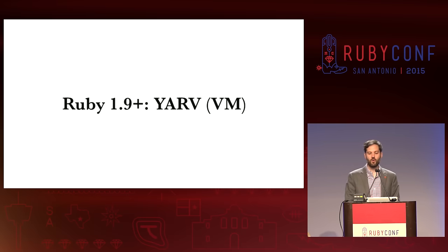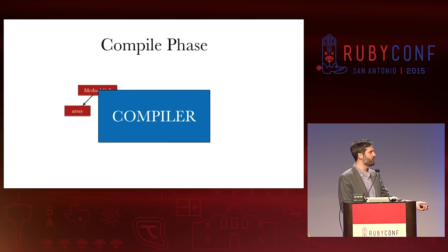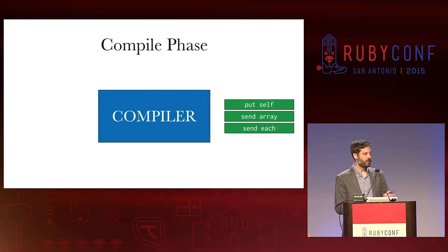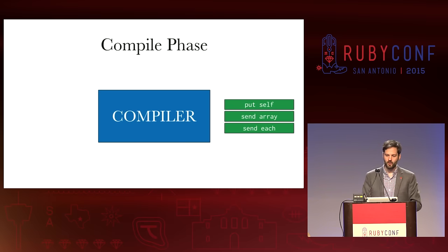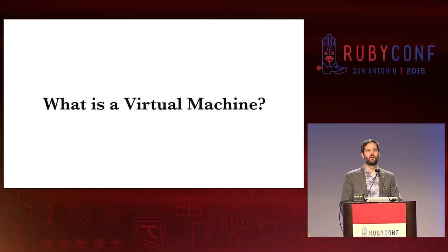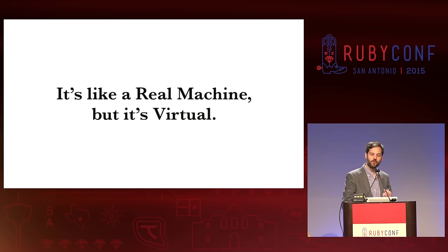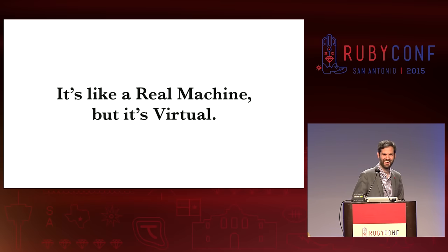Ruby 1.9 switched to a virtual machine, and what happens here is we actually have a compile phase where we take that AST and turn it into some instructions, and we evaluate those instructions rather than walking an AST. So, what is a virtual machine? Well, a virtual machine is like a real machine — but it's virtual.